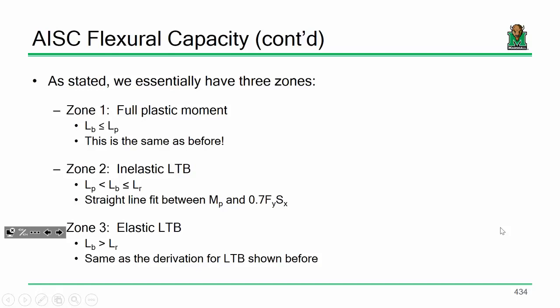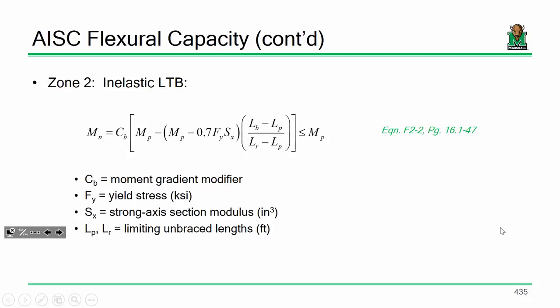So as I said, we actually have three zones. Zone one is the full plastic moment, so you can use phi times M_P or phi F_y Z_X. Zone two is your inelastic range, which is a straight line fit between M_P and M_R. And elastic LTB is zone three, and that's the same as the derivation that we saw before.